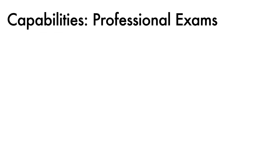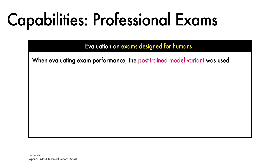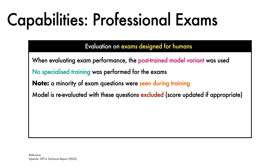To assess capabilities more comprehensively, the trained GPT-4 model was evaluated on a range of benchmarks, beginning with exams designed for humans. The post-trained model variant was used; however, no specialised training was performed to prepare for the exams. One technical point to note is that a minority of exam problems were seen during training. For such cases, the model is re-evaluated with these questions excluded, and then the score is updated to be the lower of the original score and the score with these questions excluded.